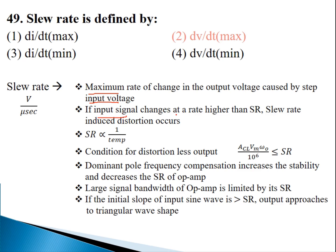If the input voltage change is greater than the slew rate, then it causes slew rate induced distortion. The third important point, which has been asked in the exam, is that the slew rate depends on temperature — if we increase the temperature, the slew rate will decrease. Fourth point: the condition ACL × Vm × ω₀ divided by 10⁶ should be less than or equal to the slew rate. ACL is closed loop gain, Vm is maximum amplitude, ω₀ is the frequency of the input signal. If we use dominant pole frequency compensation, the op-amp's stability will increase but slew rate will decrease.